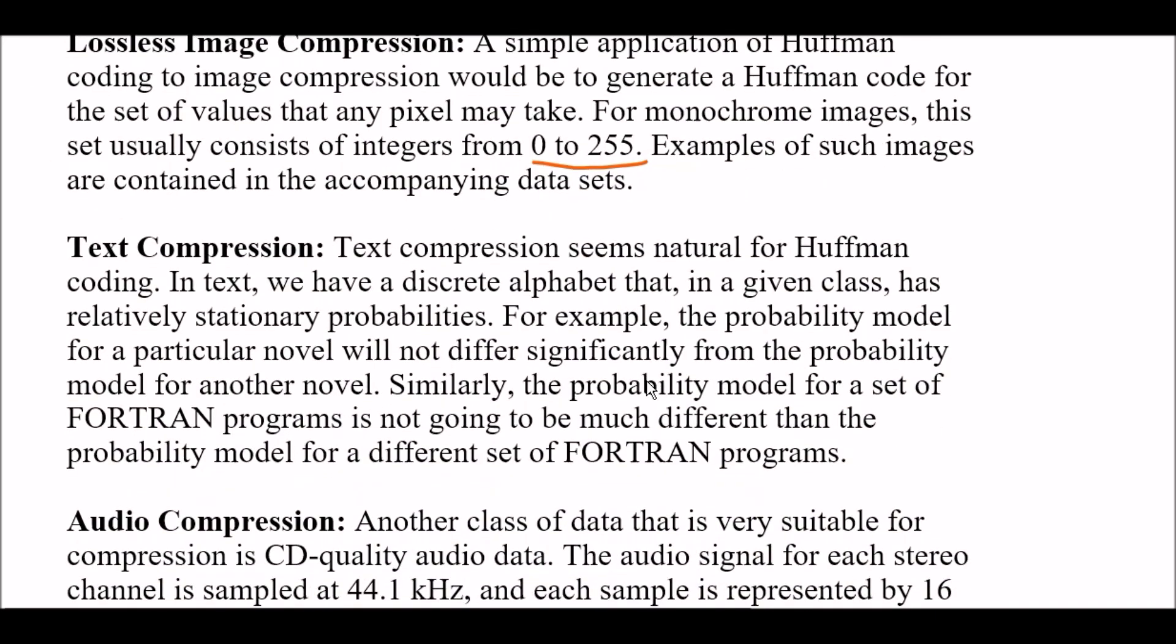Next: text compression. Text compression seems natural for Huffman coding. In text we have a discrete alphabet that in a given class has relatively stationary probabilities. For example, the probability model for a particular novel would not differ significantly from the probability model for another novel. Similarly, the probability model for a set of FORTRAN programs is not going to be much different than the probability model for a different set of FORTRAN programs.